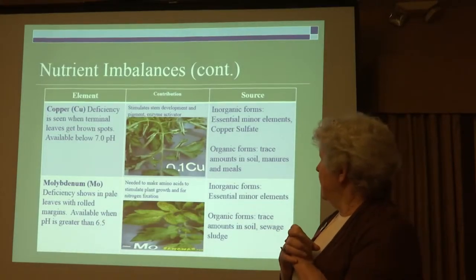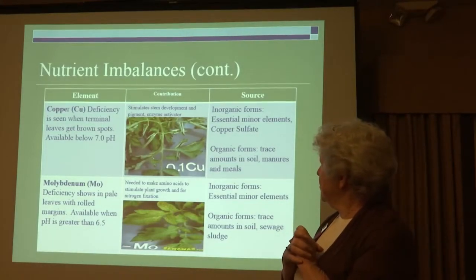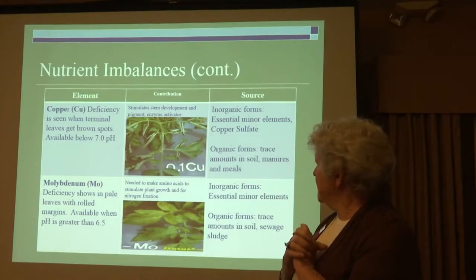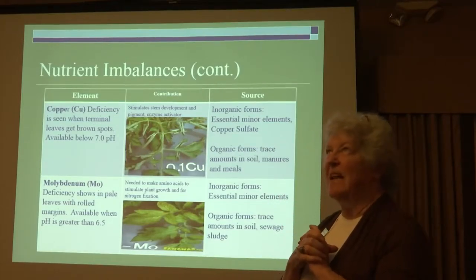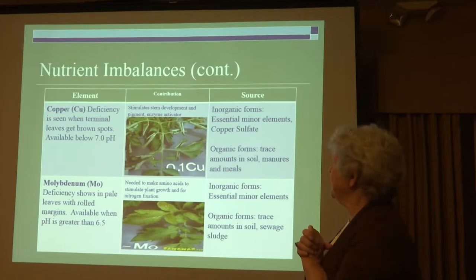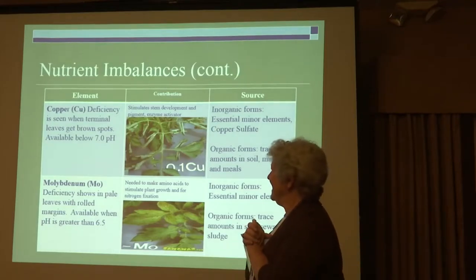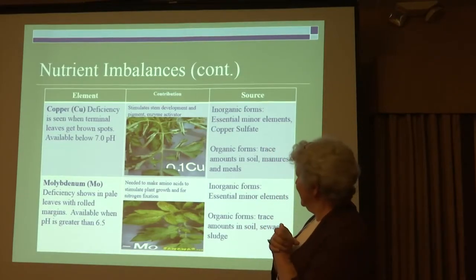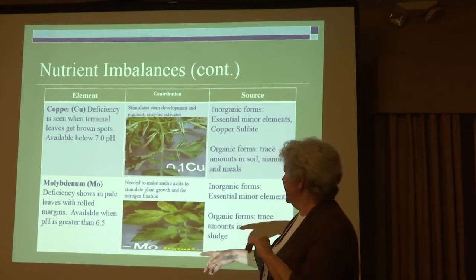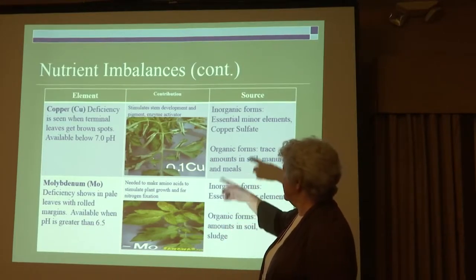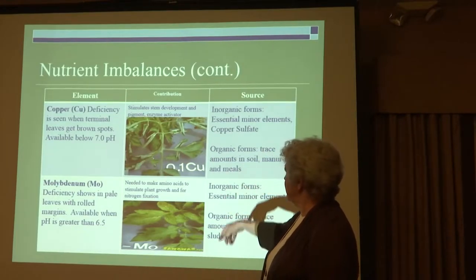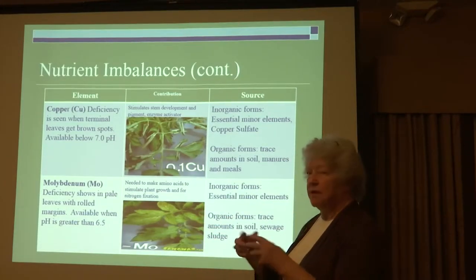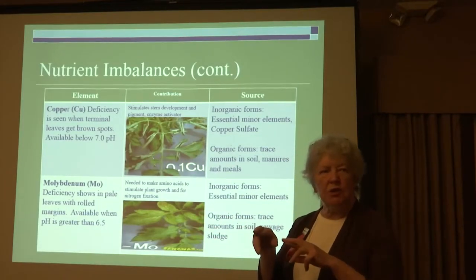Copper deficiency will give you brown spots and the leaves will start to curl. Molybdenum deficiency: you'll get rolled margins — the edges rolling up.